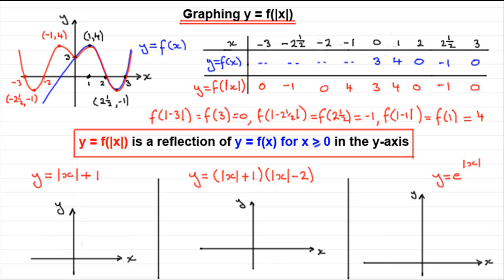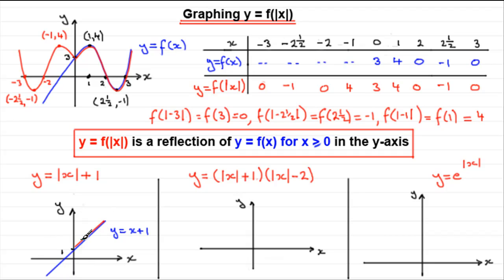Welcome back. First, let's look at y equals mod of x plus 1. We need to first draw the graph of y equals x plus 1. This is a straight line with gradient 1 crossing the y-axis at 0,1 — so it looks something like this, with the y-intercept at 1. When drawing y equals mod of x plus 1, we take the part of the graph where x is greater than or equal to 0 and reflect it in the y-axis. And what you get is the graph of y equals mod of x plus 1.